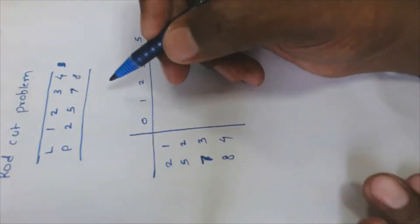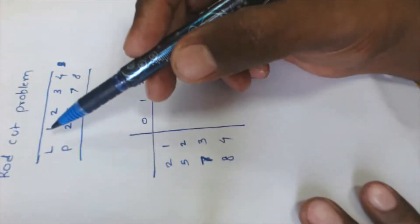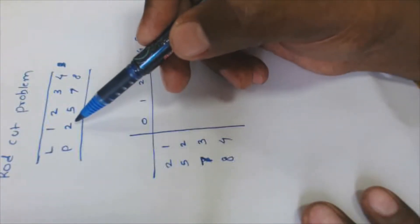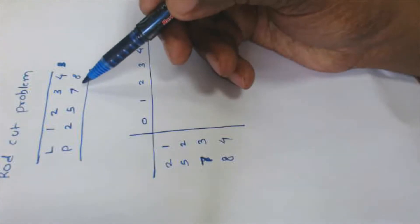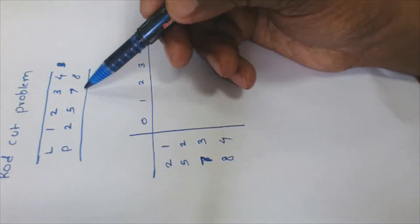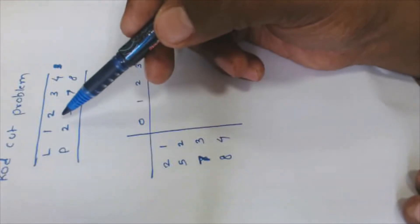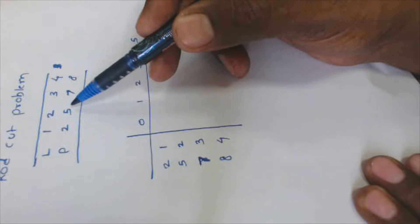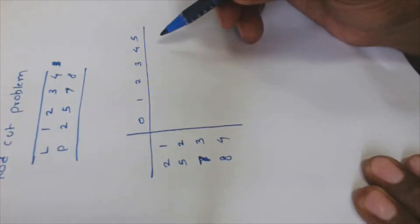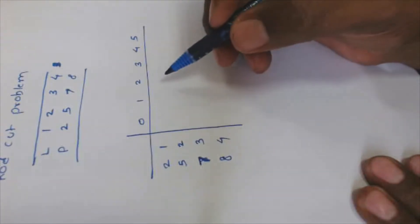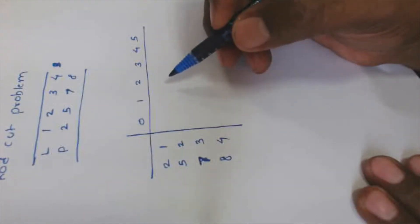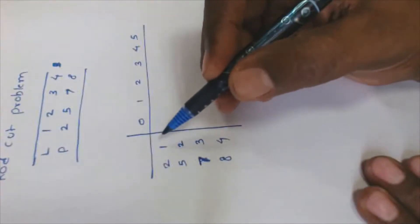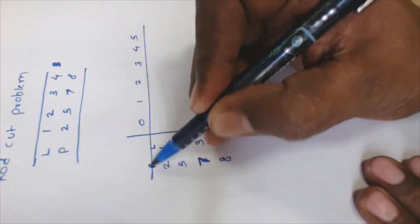Here is an example of the rod cutting problem. We have a rod of lengths one, two, three, and four, with respective prices two, five, seven, and eight. A rod of length one is sold for a price of two, while a rod of length two is sold for a price of five. We are going to find the best output from selling this rod.